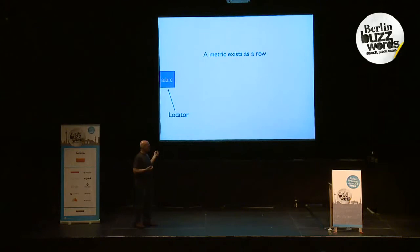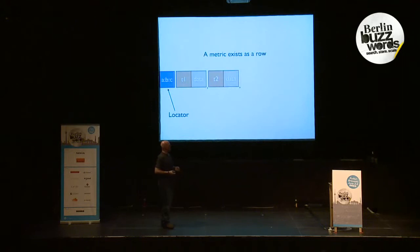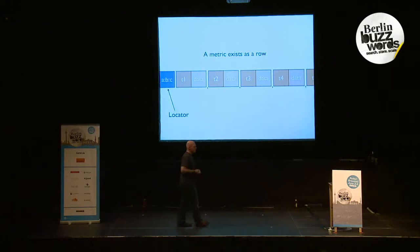An example of how metrics look as a row: we have the key with the locator, and each unit of data has a timestamp associated with it — the timestamp the data was generated, which is different from the time on the server or the time it's actually being written. As we get more data in, it just gets appended. Simple time series database concepts.